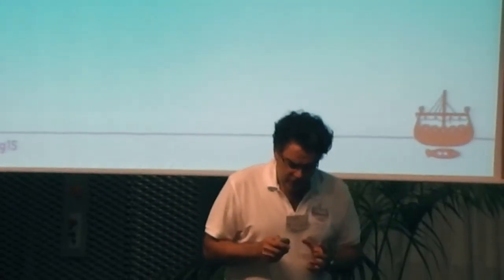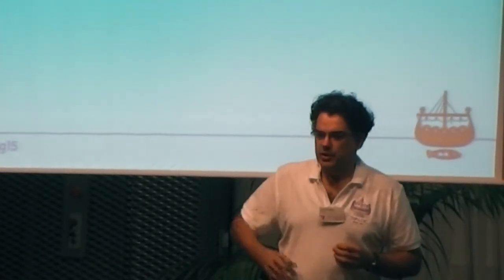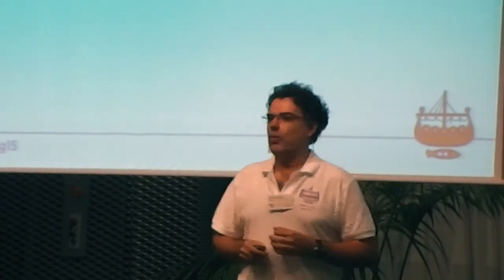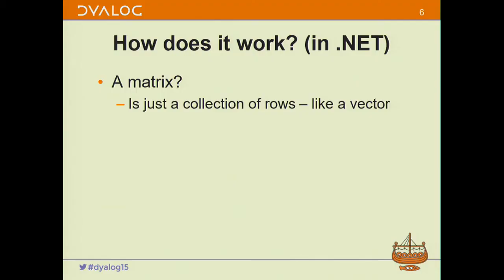In version 14.1, we introduced support for data binding to a matrix — so we've moved up the rank notch by one. A matrix can be considered as just a vector of rows. When we data bind to a matrix, what the other end sees is essentially the same sort of thing as if we were binding to a vector of namespaces — it sees an array of objects. Because it's an array of objects, our matrix implements iList, iCollection, and iEnumerable, presenting it as if it were a vector of rows.